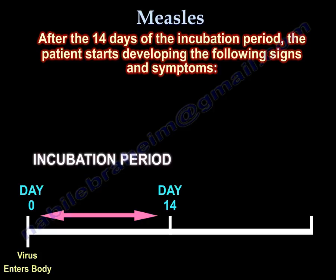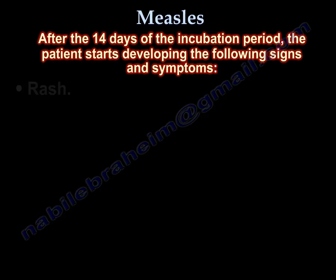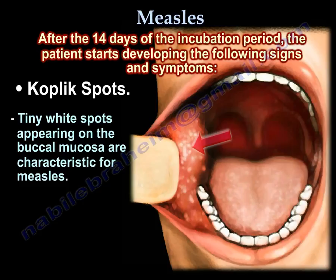After the initial 14 days of the incubation period, the patient may start developing signs and symptoms such as fever, cough, coryza, and conjunctivitis. A characteristic red maculopapular rash also develops, appearing first on the face behind the ears and then spreading downwards towards the neck, trunk, arms, legs, and feet. Disease-specific Koplik spots may also develop, which are tiny white spots that appear on the buccal mucosa, characteristic for measles.